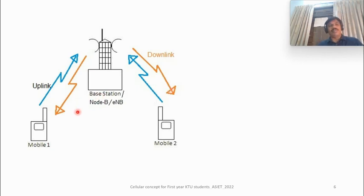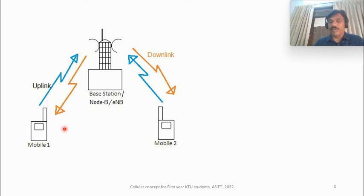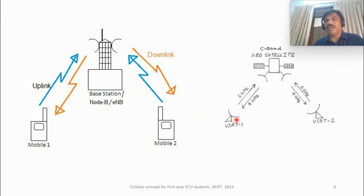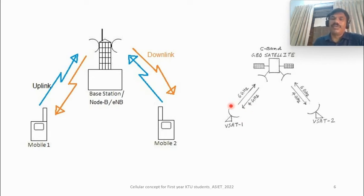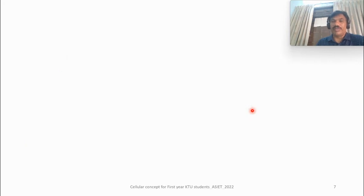An important concept: uplink and downlink frequency. Mobile handset to the nearby base station is called uplink frequency; the reverse — base station to mobile — is called downlink frequency. In satellite communication, the uplink frequency is 6 GHz and the downlink frequency is 4 GHz. This is from the ground station up to the geosynchronous satellite (6 GHz uplink) and back down (4 GHz downlink).